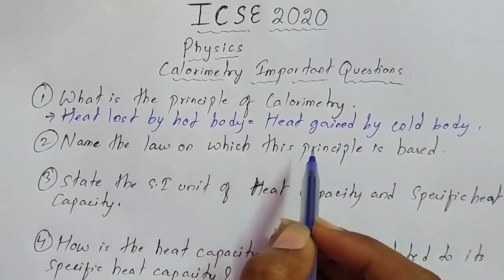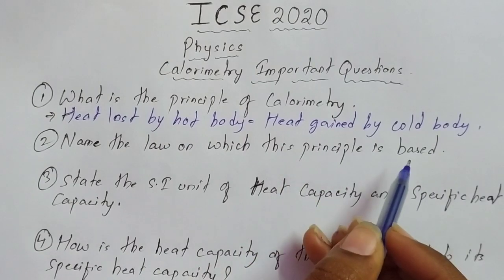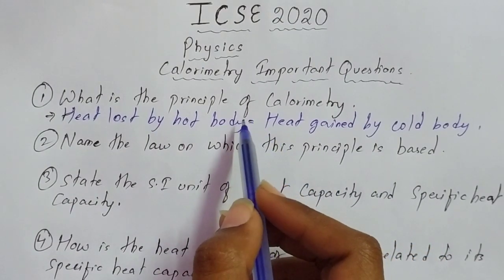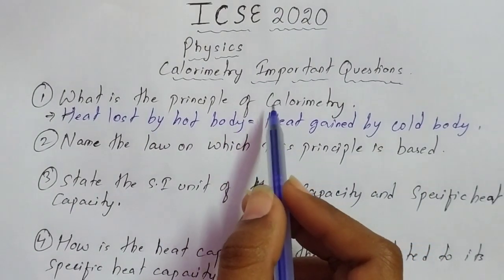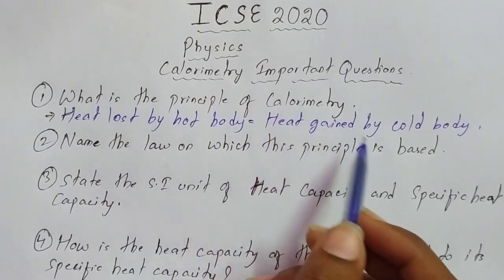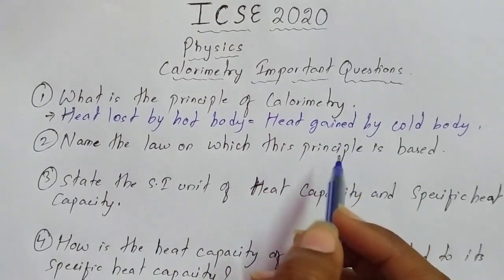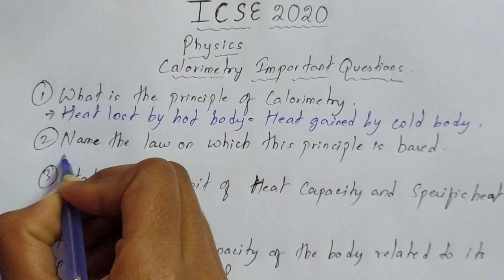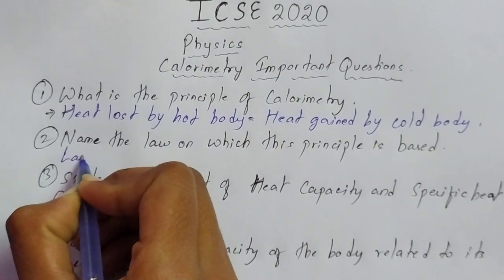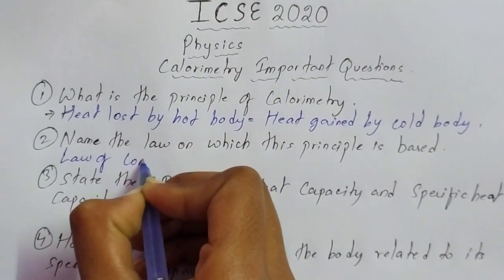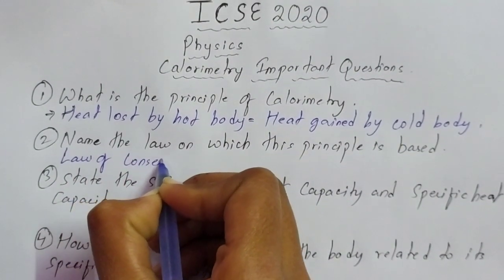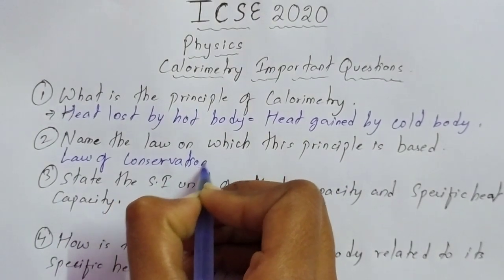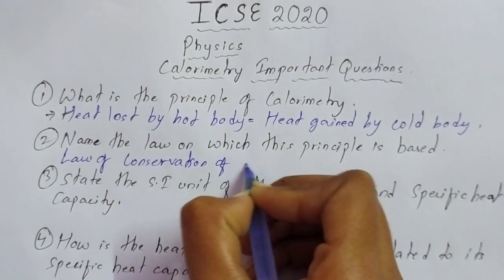Question number 2: name the law on which this principle is based. That means you have to name the law on which the principle of calorimetry, or the principle of mixtures, is based. It is based on the law of conservation of energy.